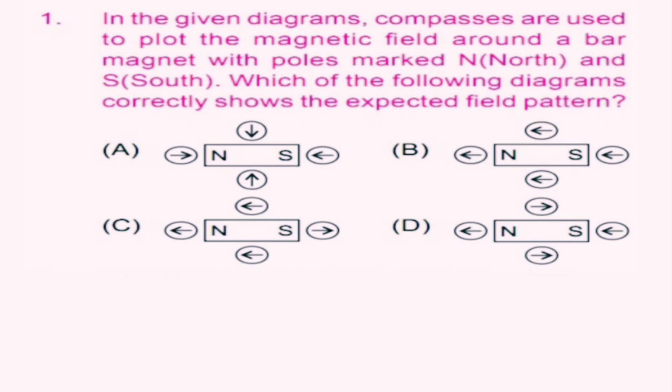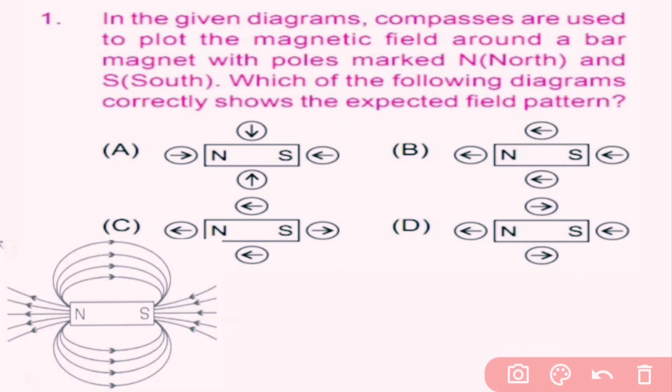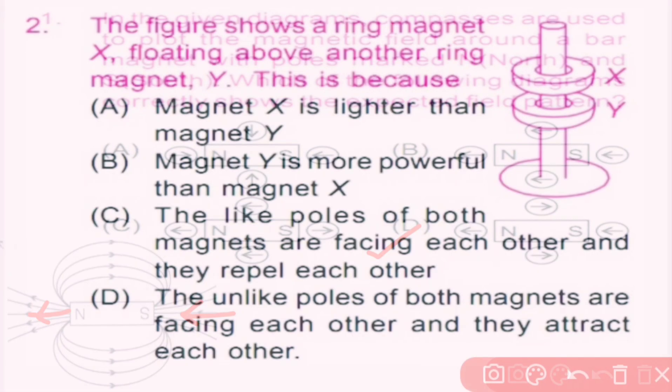The field lines always go from north to south. They are drawn coming out of the magnet at the north pole and going into the magnet at the south pole. So here, D is the correct answer.